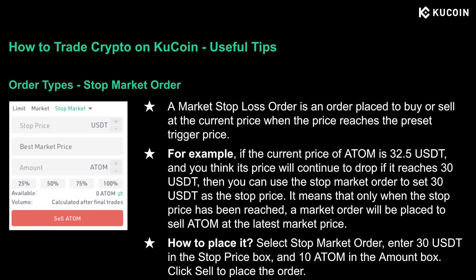A stop market order aims to buy or sell at the current market price when the price reaches the preset trigger price. For example, if the current price of ATOM is 32.5 USDT and you predict that the price will continue down if it reaches 30 USDT, then you can use the stop market order to set 30 USDT as the stop price. Whenever the stop price is reached, a market order will be placed to sell ATOM at the latest price. Just select stop market order, enter 30 USDT in the stop price box and 10 ATOM as the amount, and click sell to place the order.